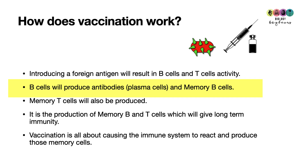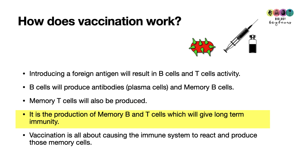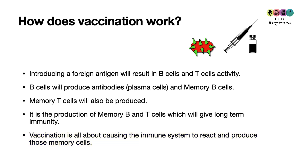Memory B cells and memory T cells will also be produced, because when those helper T cells recognize the antigen and become active, they also produce memory cells. It's the production of those memory T cells and memory B cells that gives long-term immunity. The body has the memory of what to do should it ever encounter that specific antigen for real.